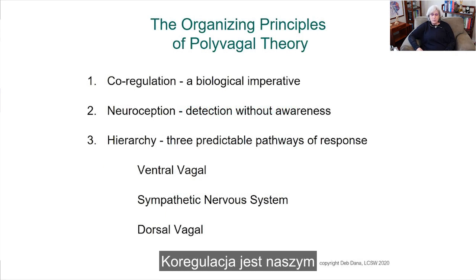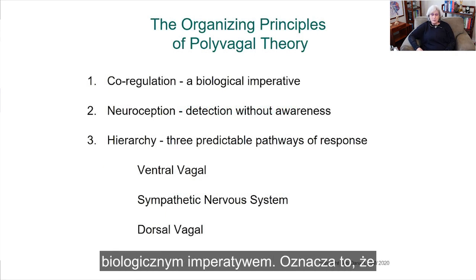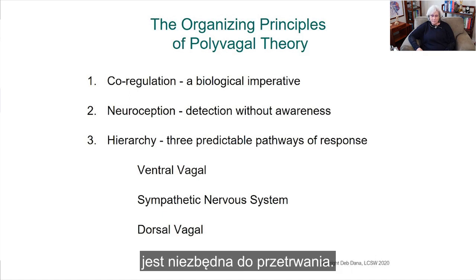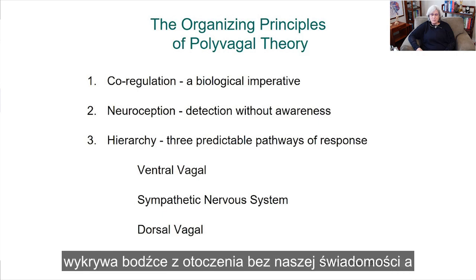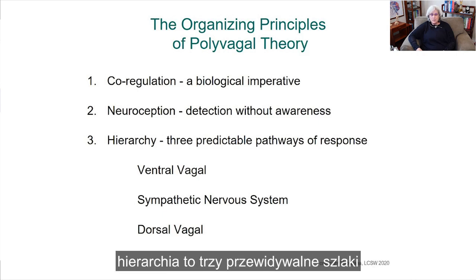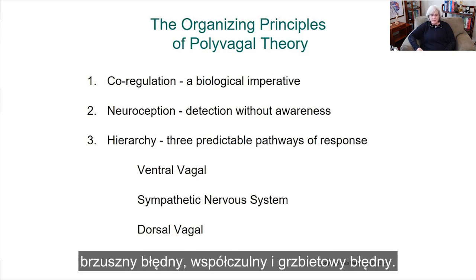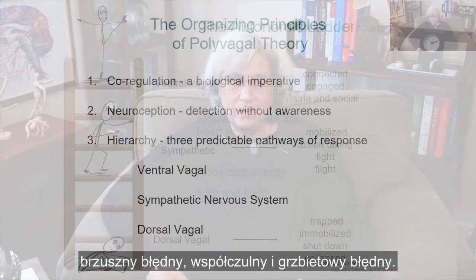Co-regulation is what we call a biological imperative, meaning it's something we don't survive unless we have. Neuroception is the way the nervous system detects without awareness. And hierarchy refers to the three predictable pathways of response: ventral vagal, sympathetic, and dorsal vagal.